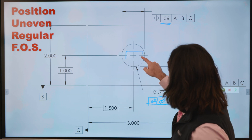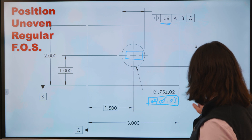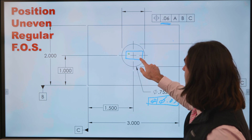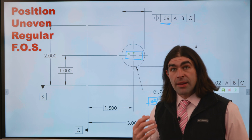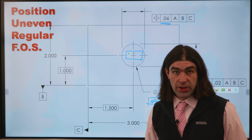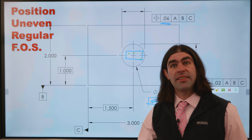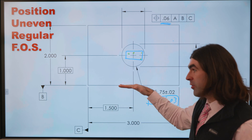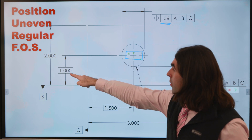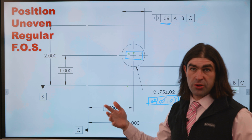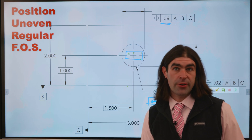So the tolerance zone would look something like this: 60 thousandths wide this way, 20 thousandths this way, and then the axis of the hole has to lie within that tolerance zone. Inspection-wise, this is actually easier to check than the normal position because you don't have to convert your coordinates into that diameter. So if you go to check this on the plate and you're measuring from B and you get 1.01, you're good — you can tell already that it's within that tolerance zone.